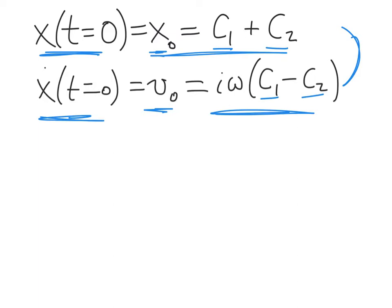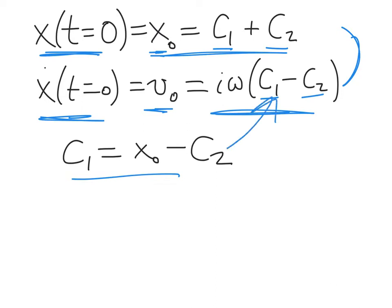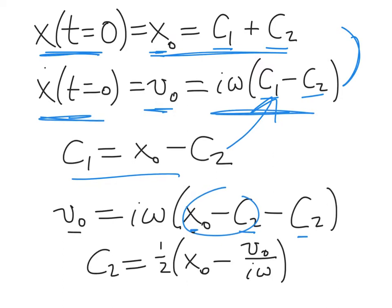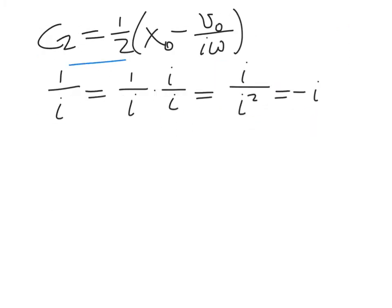So we can take that first equation and solve it for c1 as a function of c2: c1 is just x₀ minus c2. We take this and plug it into the second equation: v₀ equals iω times (x₀ minus c2), all coming from c1, minus c2 again. We can work this up to give an expression for c2 in terms of v₀ and x₀: c2 is one-half times (x₀ minus v₀ over iω).